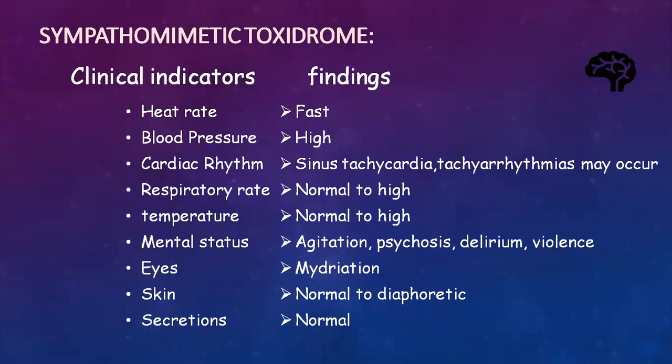Coming to the sympathomimetic toxidrome — the clinical indicators are: the patient will have a very fast heart rate and very high blood pressure; sinus tachycardia or tachyarrhythmias may also occur. Respiratory rate will be normal to high, temperature normal to high. Mentally, the patient will be agitated and may attend to psychosis and delirium, leading to violence. Eyes: pupils will be dilated (mydriatic). Skin will be normal to diaphoretic, and all secretions are normal.